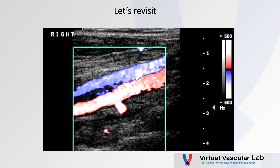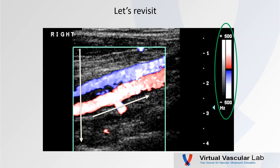Now let's revisit these popliteal arteries. First, check our color bar: flow towards the transducer is red, flow away is blue. Our look angle is straight down. The popliteal artery shows flow towards the transducer — moving from left to right. The vein shows flow away, moving right to left. But how about this collateral down here? Flow towards the transducer — this is an inflow collateral. It shouldn't be.